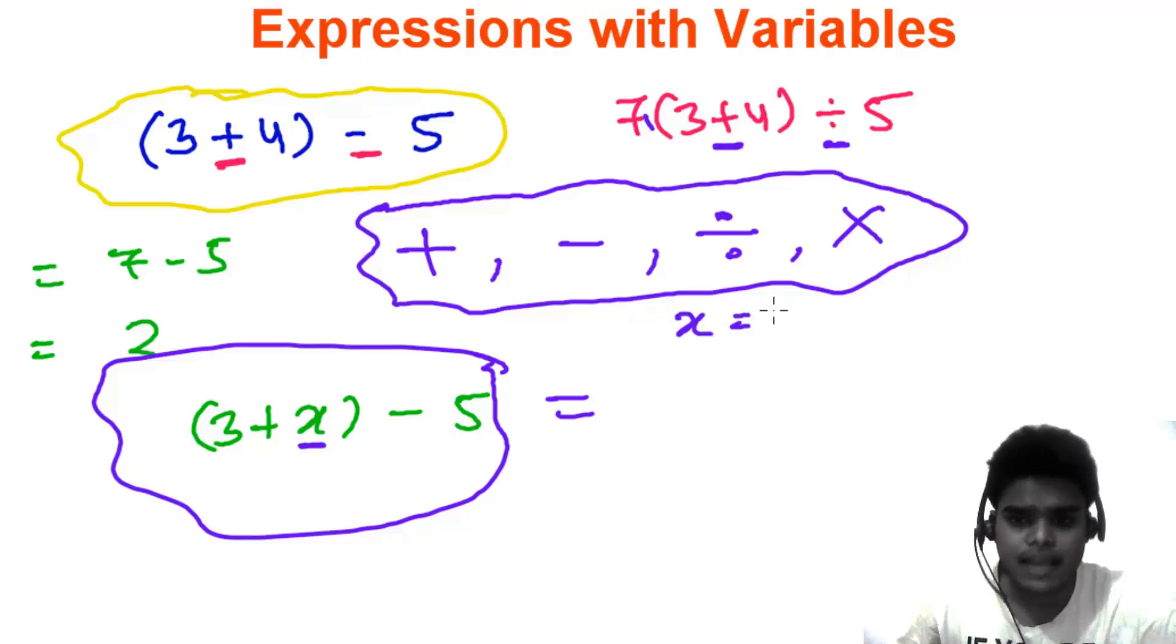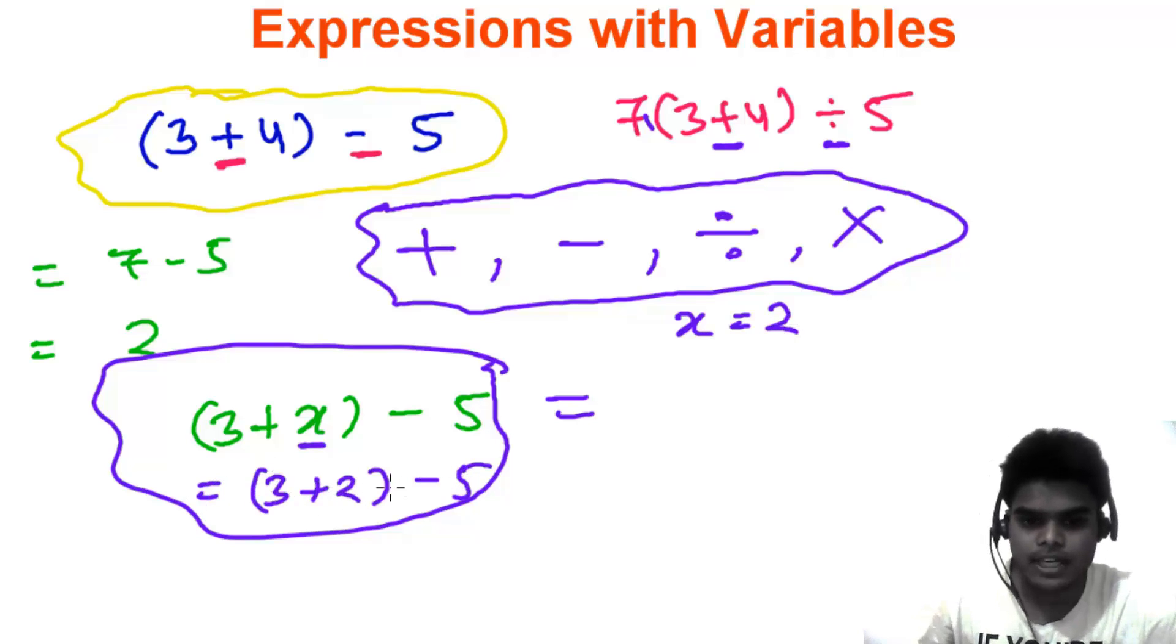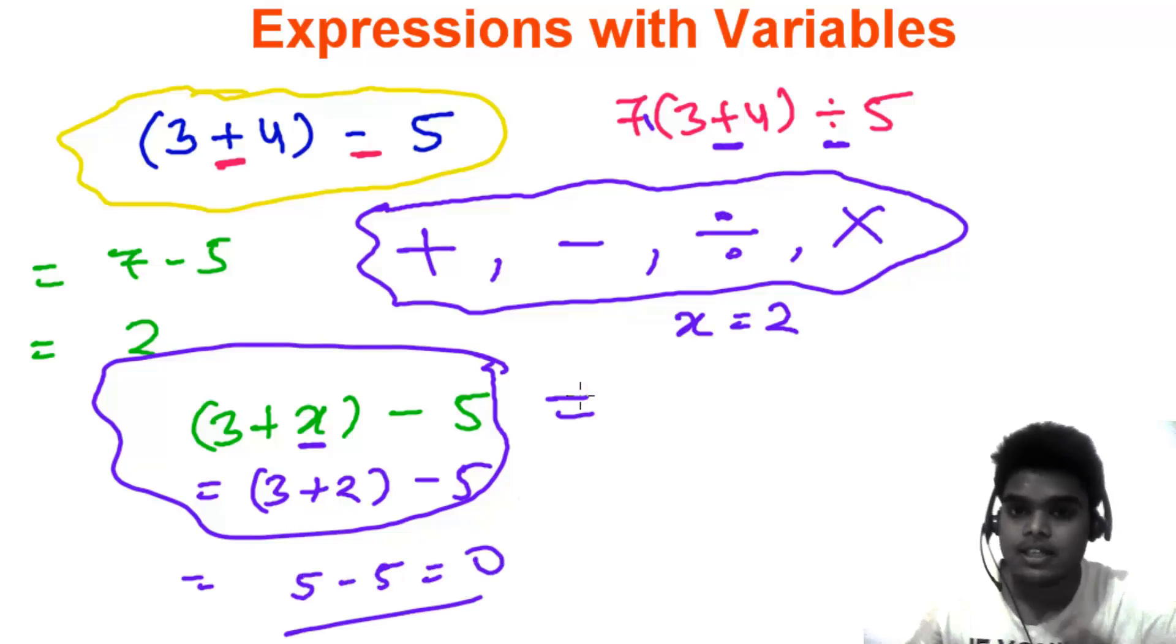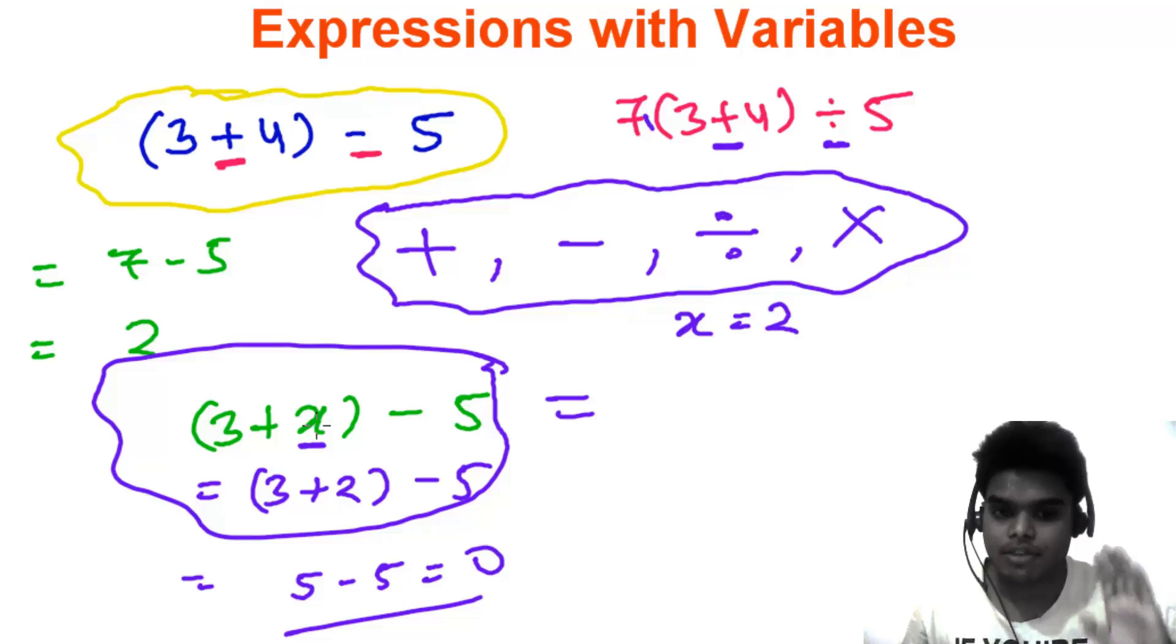3 plus 2 minus 5, and then 3 plus 2, that is 5 minus 5, equals to 0. So remember that, if you don't know the value of x, it's going to be difficult. You cannot find the exact value of that. So we're going to learn the expressions with the variables.